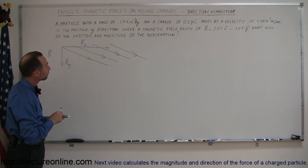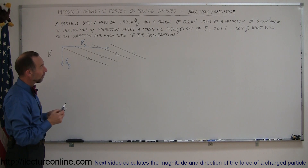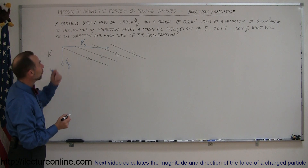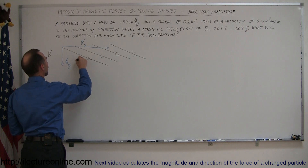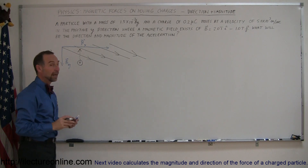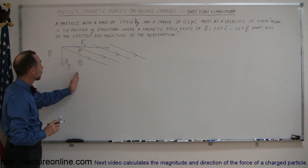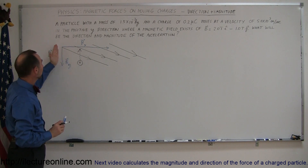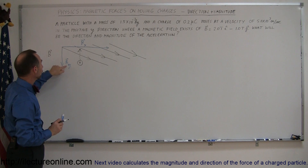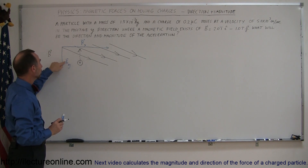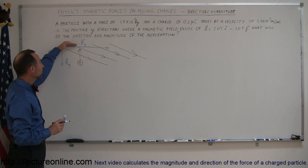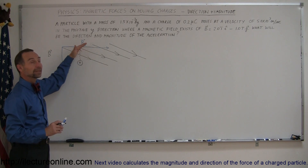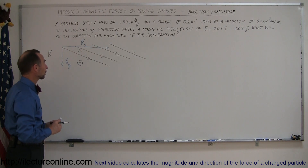Now we have a charged particle. It's positively charged and it's moving in a positive y direction. You can see that the direction of the movement of the particle is parallel to the y component of the B field, so this y component is not going to produce any forces on this particle, because this component is perpendicular to — wait, rather, the y component is parallel to the direction of motion of that particle.